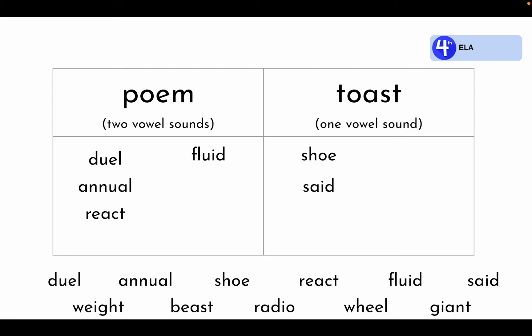Next is the word wait. Yes, it belongs under toast. The e and i are working together to make the a sound. Then we have the word beast. It also belongs under toast — the e and a are working together to make one vowel sound. Next is the word radio. It belongs under poem. The i and o are not working together to make one vowel sound; there is actually a syllable break in between these two vowels. Two more words to go. Next is the word wheel. It belongs under toast — the ee is working together to make one vowel sound.